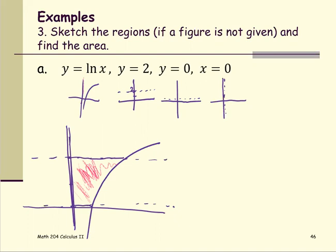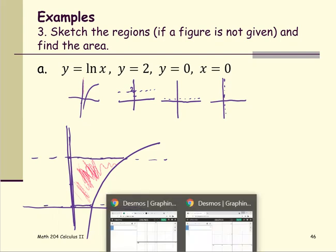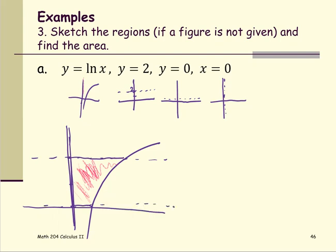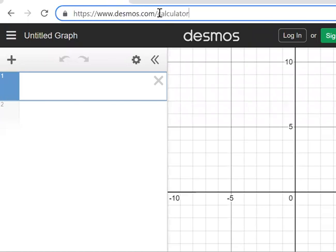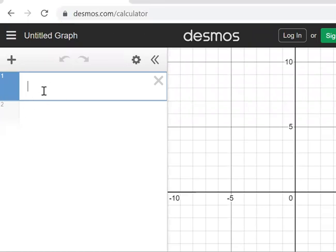If you're not sure how to draw the graph, you can use the Desmos graphing calculator. I'm going to open it on screen. You can type in y equals natural log of x and the other lines: y equals 0, y equals 2, and x equals 0. This is also available at Desmos.com, which you can use for homework as well.